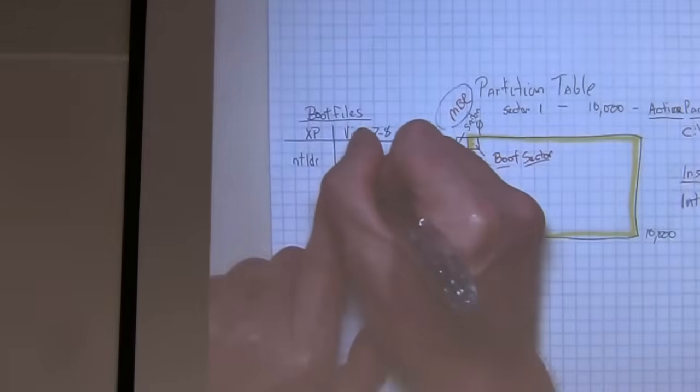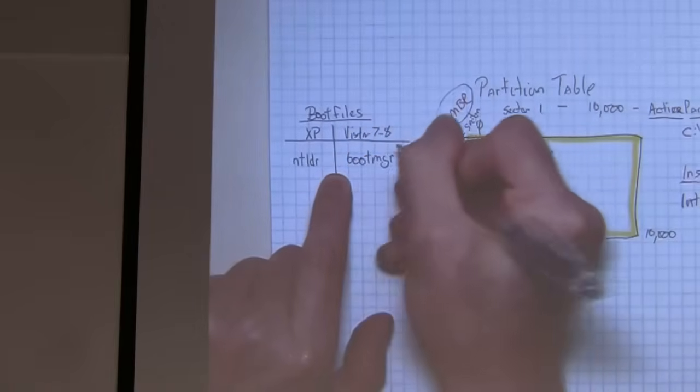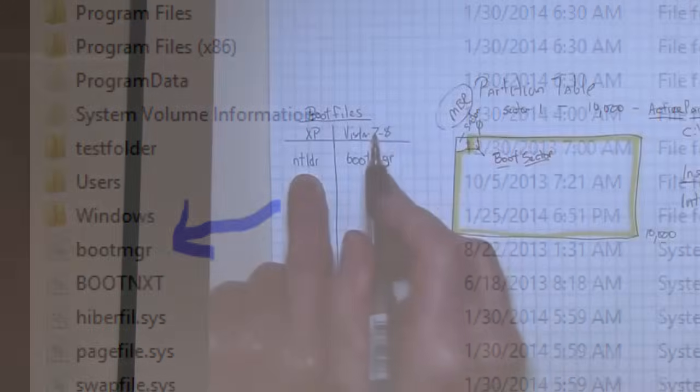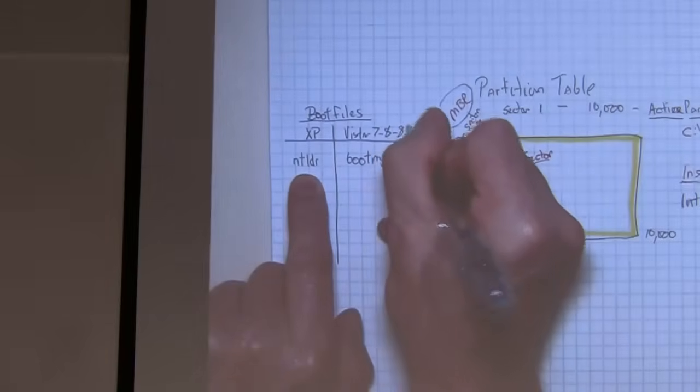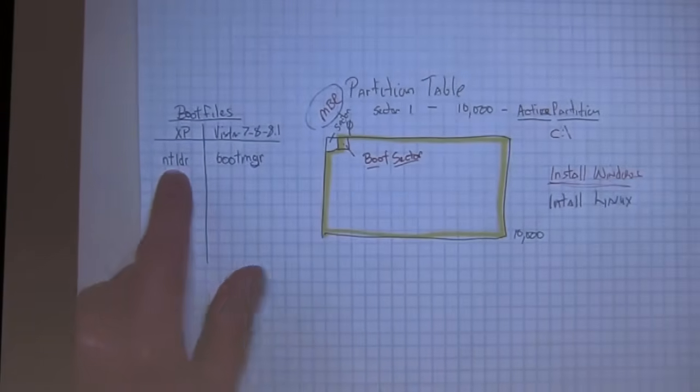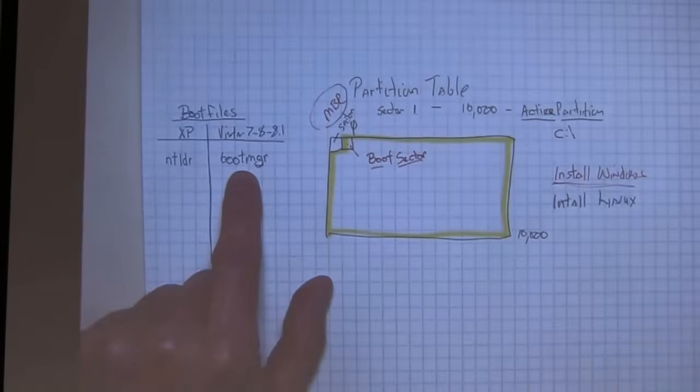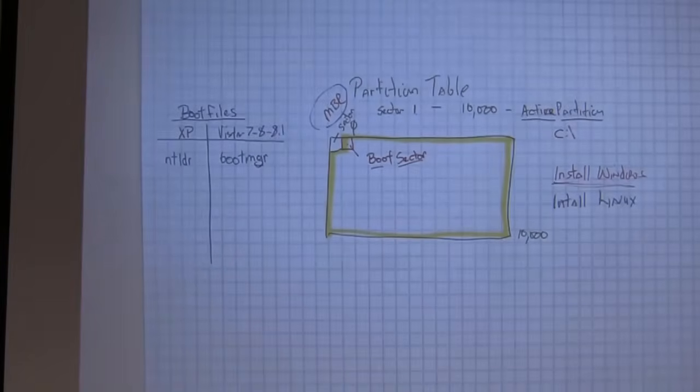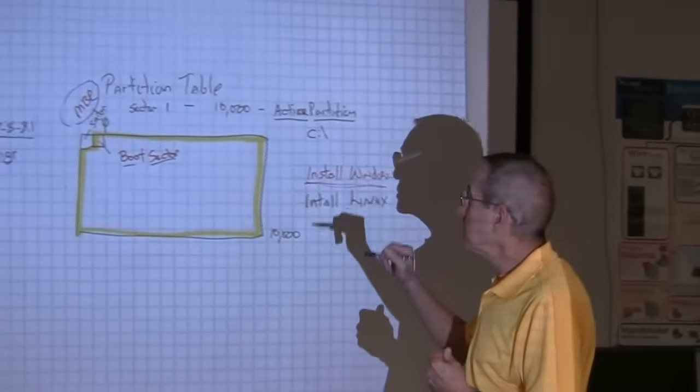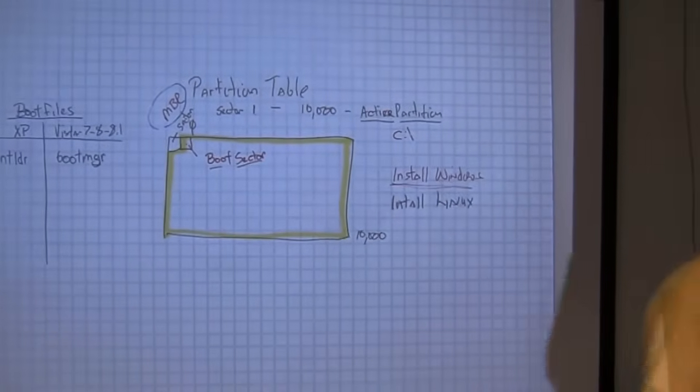In Vista, it's called bootMGR. That's the name of the file. These are the two files that launch Vista, Windows 7, Windows 8, and 8.1. If you look inside the boot sector, you will actually see that file name. And by looking in the boot sector and seeing the file name, you know what operating system is going to be starting. NTLDR is what starts XP. Boot Manager is what starts Windows 7, 8, and 8.1.